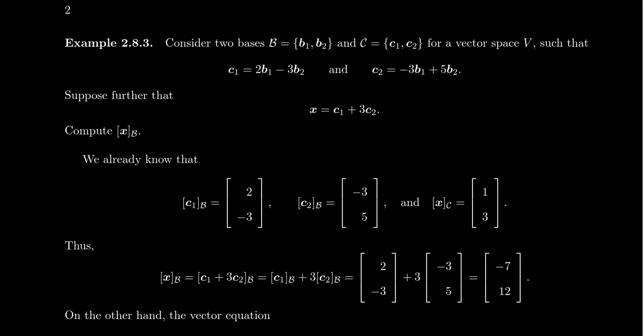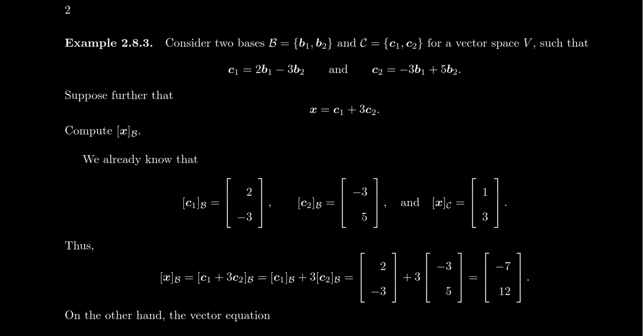In the previous video, we introduced the notion of a coordinate vector for a vector given a basis, but it was very important we emphasized that the coordinate vector was relative to a basis. Now given a vector space V, one could actually have numerous different bases for that same vector space. So in this example, let's consider two different bases for this vector space V.